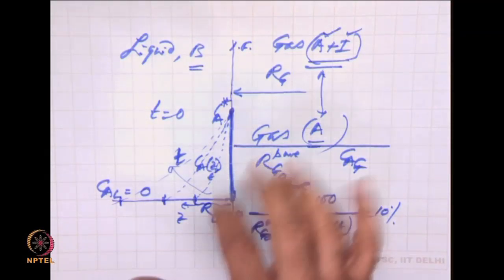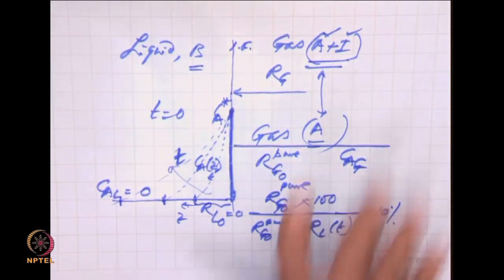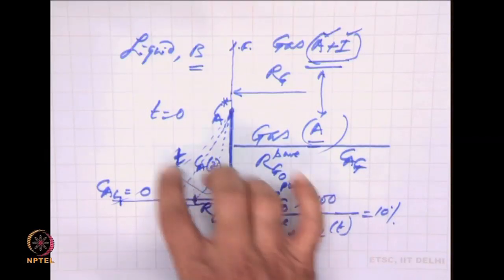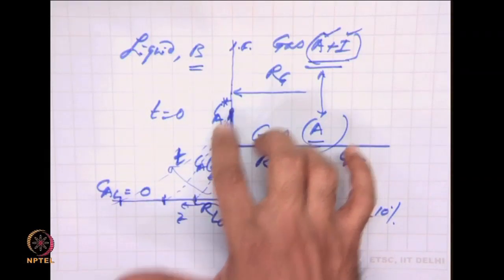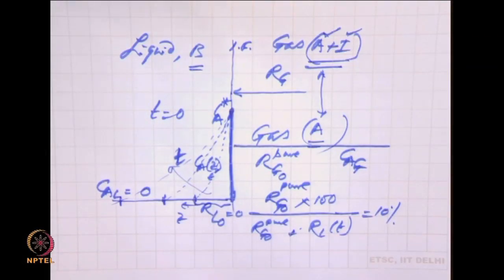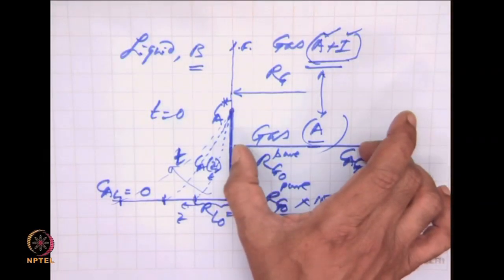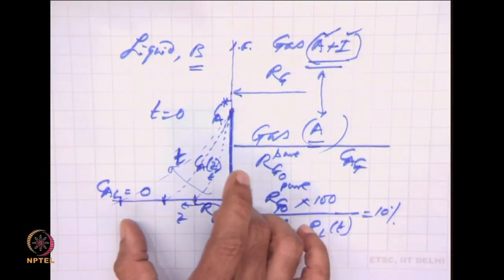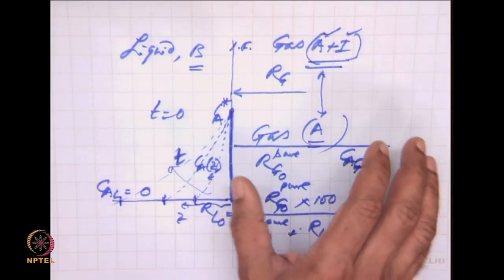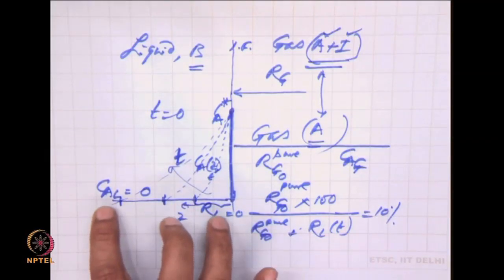If it were a dilute gas — solute A in inert I — the gas phase resistance will be even greater. The least resistance is when there is no inert and only pure solute is in the gas phase. As transfer occurs, the concentration at the interface remains the saturation concentration because the gas is pure. This gradient now diminishes and becomes finite and lesser as time progresses, corresponding to concentration of diffusing A advancing deeper into the liquid. As more liquid thickness comes into picture, the liquid phase resistance increases. Even for pure gas and pure liquid, the time over which gas phase resistance is significant is only very short — within about 10 picoseconds the resistance in the liquid becomes about 9 times the resistance in the gas phase.